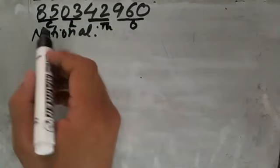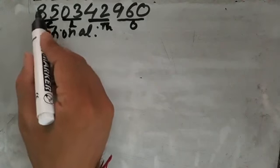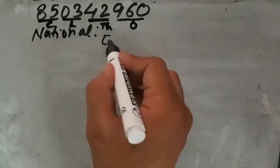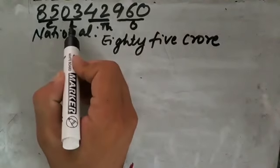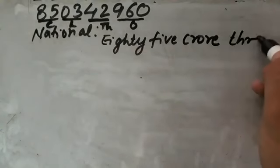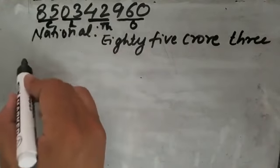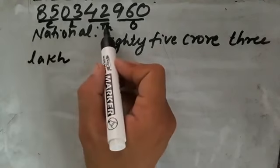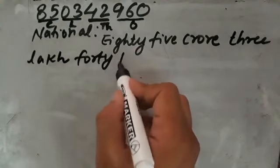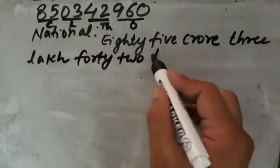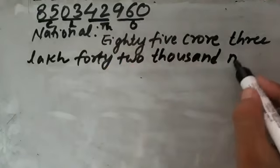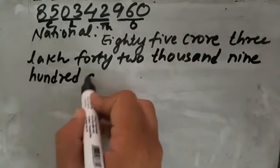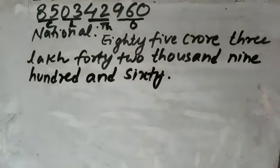So 85 comes under the period of crore. In the period of lakh there is 0 3, which means 3, so 3 lakh. In the period of thousands there is 42, so forty-two thousand. In the period of ones there is 960, so 960. In this way we have written this number in national system.